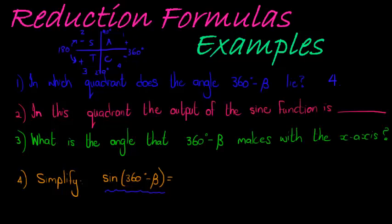The next question is in this quadrant, the output of the sine function is... We notice that in the fourth quadrant there's a C, which means that only cos is positive in this quadrant. The rest is all negative, so sine would be negative.